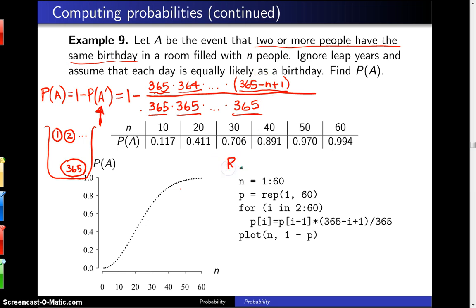Here is some R code that can be used to calculate this. We set N from 1 through 60. We have a vector P that will be 60 ones. Then as i goes from 2 to 60, we calculate these P values. That is the probability of A' being computed. Then we plot N versus 1 minus P to account for the 1 minus that shows up here. And there are the probabilities.